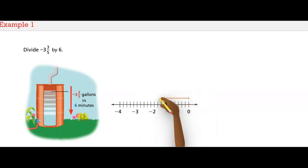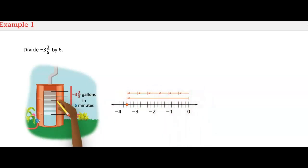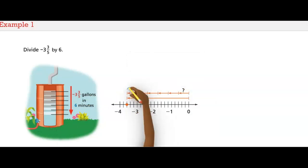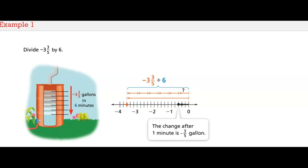A total of three and three-fifths gallons of water drain from the barrel in six minutes. To find a rate of change over one minute, divide the given change in volume into six equal parts. So divide negative three and three-fifths by six. The change after one minute is negative three-fifths gallons.